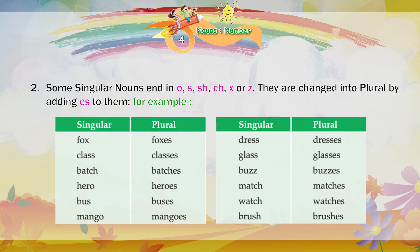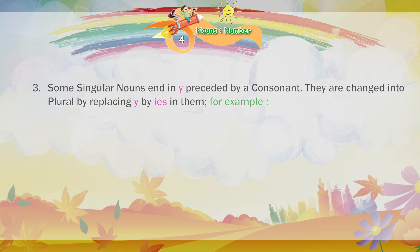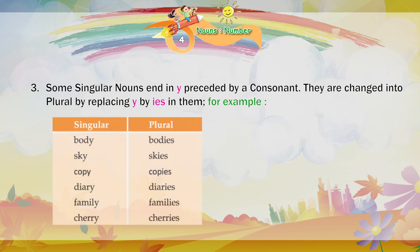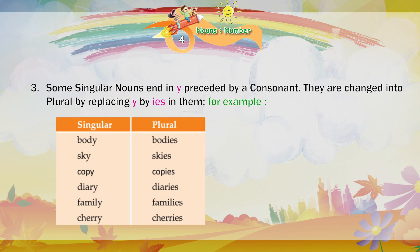Some singular nouns end in Y preceded by a consonant. They are changed into plural by replacing Y by IES in them. For example: